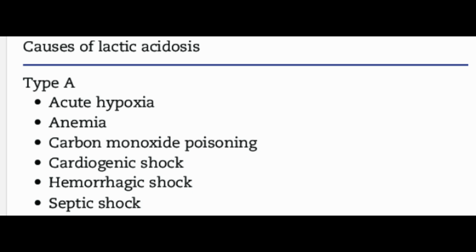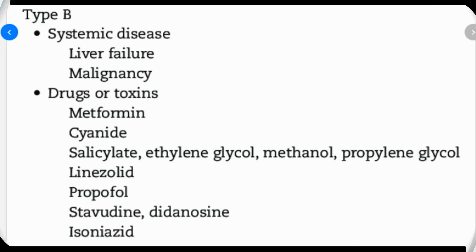There are two types of lactic acidosis: Type A and Type B. Type A lactic acidosis is caused by tissue hypoperfusion resulting from hypovolemia, cardiac failure, sepsis, or cardiopulmonary arrest. Type B lactic acidosis is caused by impairment of cellular functioning and localized areas of tissue hypoperfusion. Lactic acidosis has many causes and can often be treated, but if left untreated it may be life-threatening.